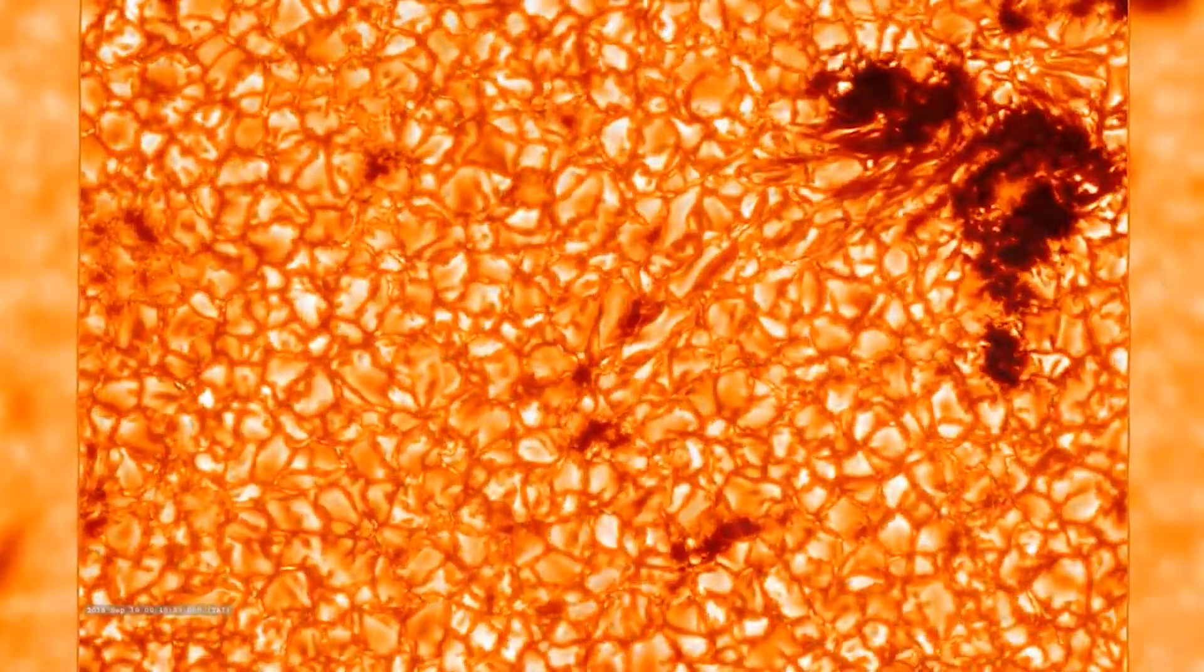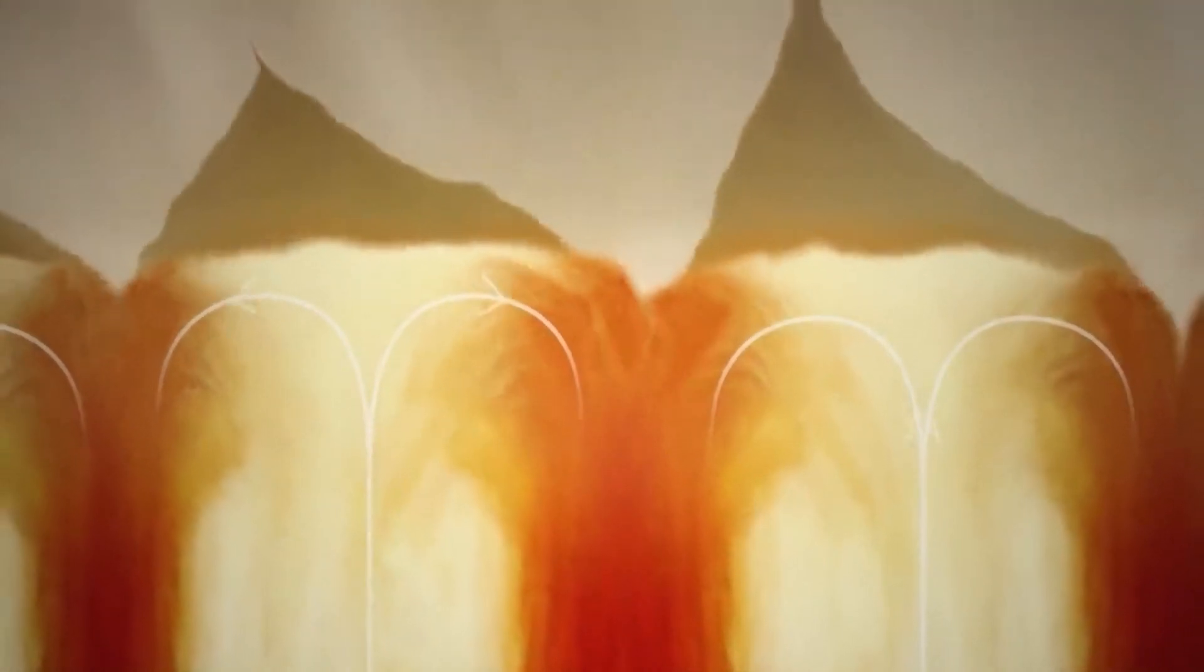While the photosphere, located just 1,600 kilometers below the corona, is 10 million times denser and reaches temperatures of only 10,000 Fahrenheit or 5,000 Celsius, the corona may reach temperatures of 1.1 million Celsius or higher.